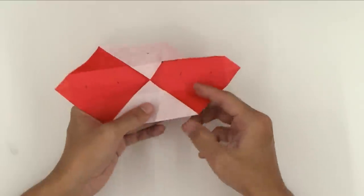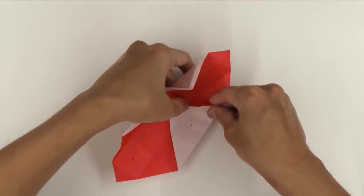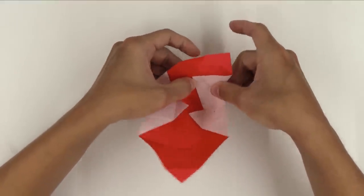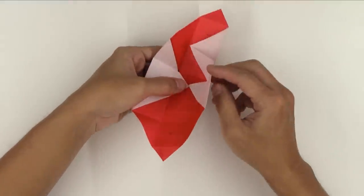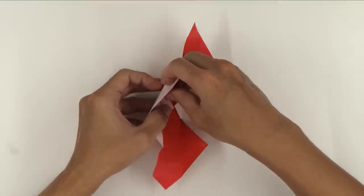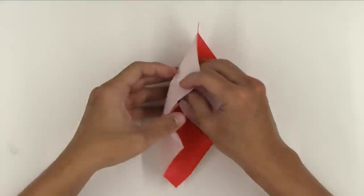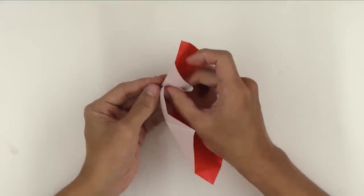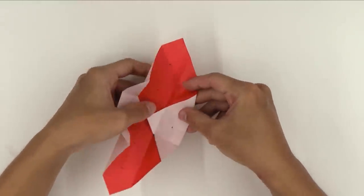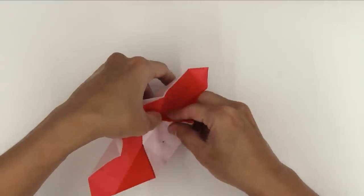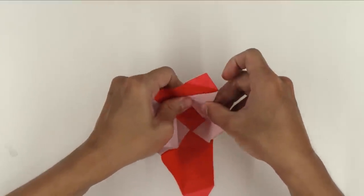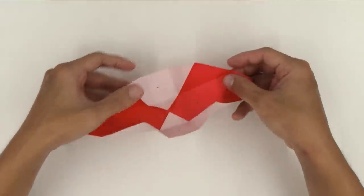Now, unfold, and do the same thing here. Unfold again. And repeat on the other two sides. And the model will look like this.